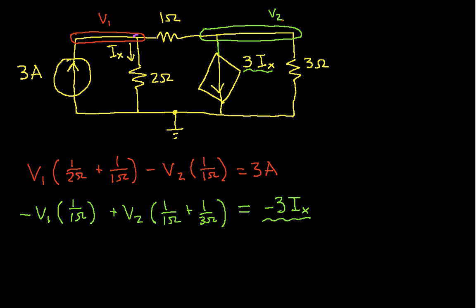You'll notice IX is the current from here to here, which would mean then that IX will be equal to V1 over 2 ohms. It's the voltage across the resistor divided by the resistance. So we actually have now three equations and three unknowns.